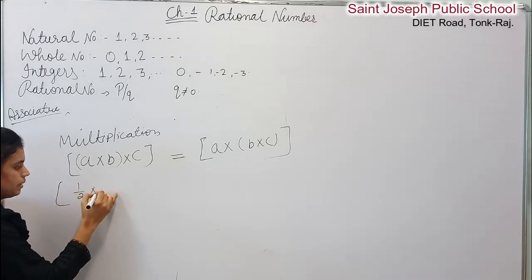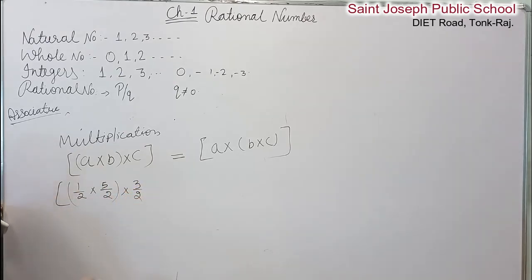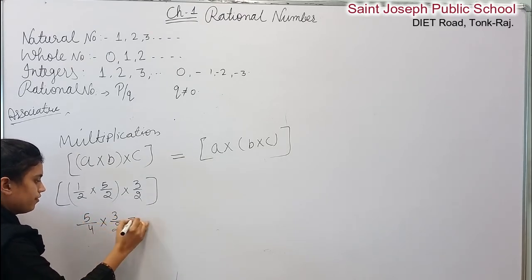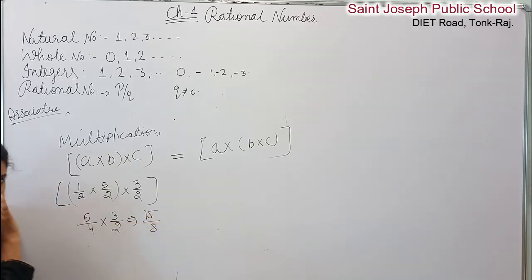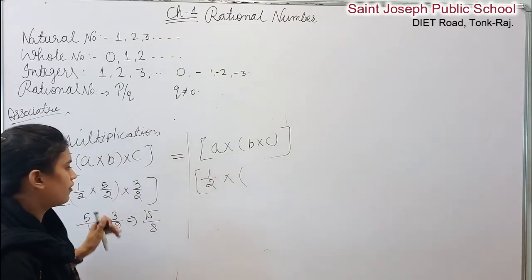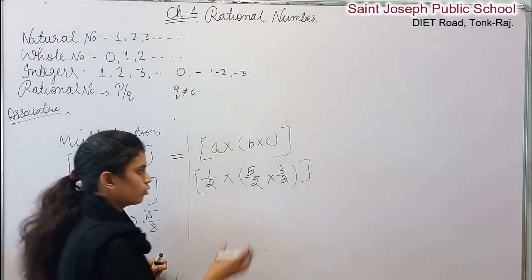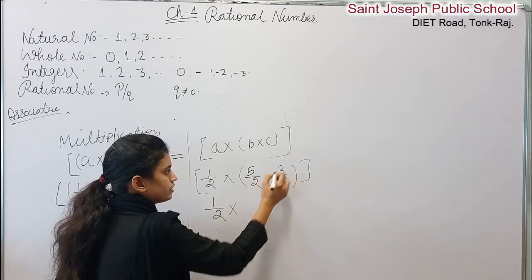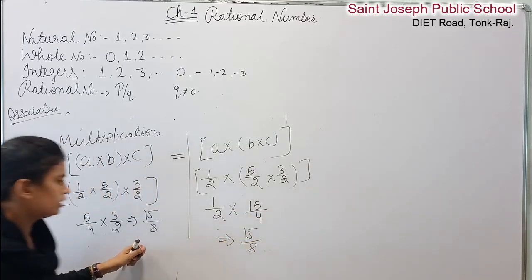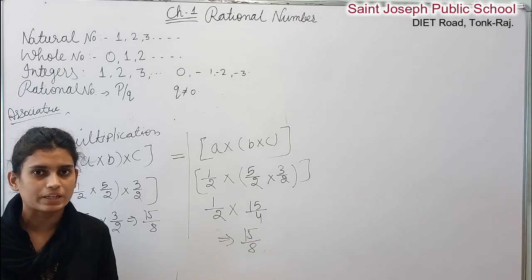For multiplication associative property, take 1 by 2 multiplied by (5 by 2 into 3 by 2). Solving the bracket first: 5 by 2 times 3 by 2 equals 15 by 4. Then 1 by 2 times 15 by 4 equals 15 by 8. The associative property for multiplication is also satisfied.